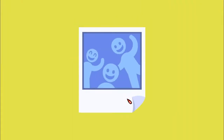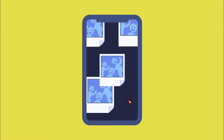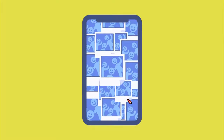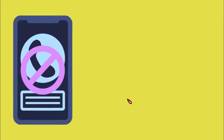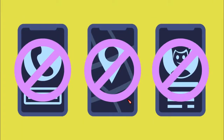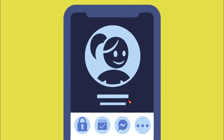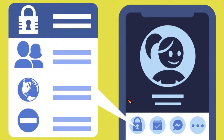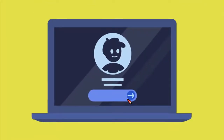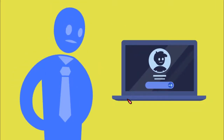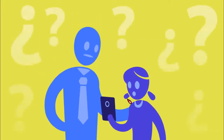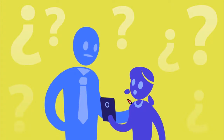The video continues with key tips: pictures and information you post or send can be easily re-shared by others and could remain online for a very long time. Don't share phone numbers, addresses, or personal details — this information could be misused by others. Always check your privacy settings so you know what people can see or who can contact you. When signing into a website or social media, ask an adult for help. Choose a difficult password and share it only with your parents. If you have any doubts, always ask an adult for help.